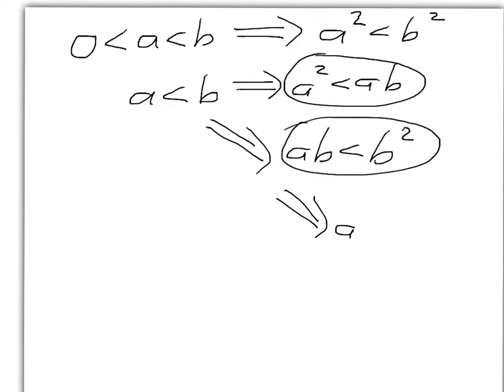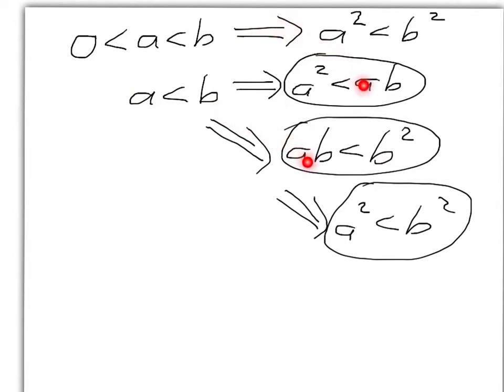That's the idea of the proof. You'll notice that we started from things that we know and proceeded using properties that we know to be true to get to the final answer. We're very close to having the real proof here because everything proceeds exactly in the order that we came up with it — all of the things we've written down are things that we know, not things that we're trying to get to. So let's now try to write this up in a proper proof.